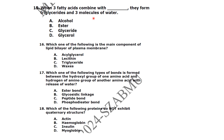Which one of the following is the main component of the lipid bilayer in the plasma membrane? Phospholipids are the main component. Which one of the following types of bond is formed between the hydroxyl group of one amino acid and the hydrogen of the amino group of another amino acid with release of water? This is called the peptide bond.